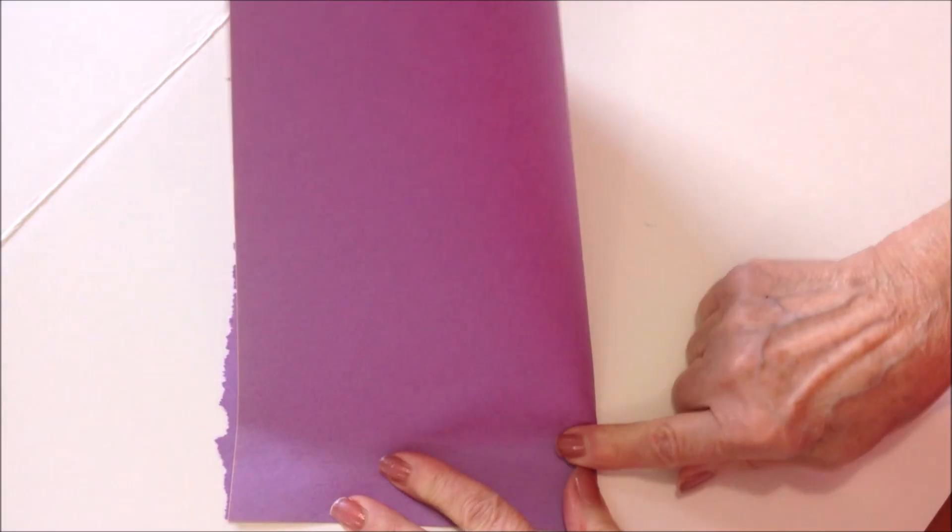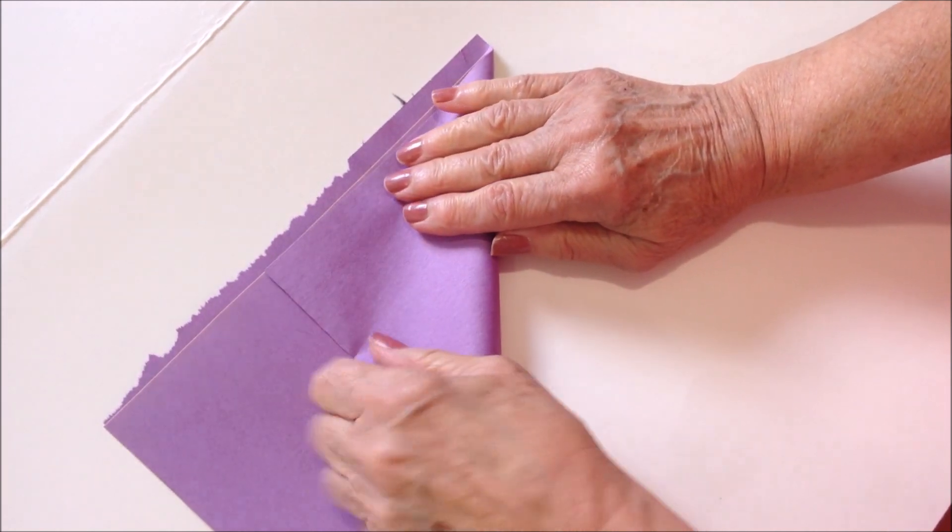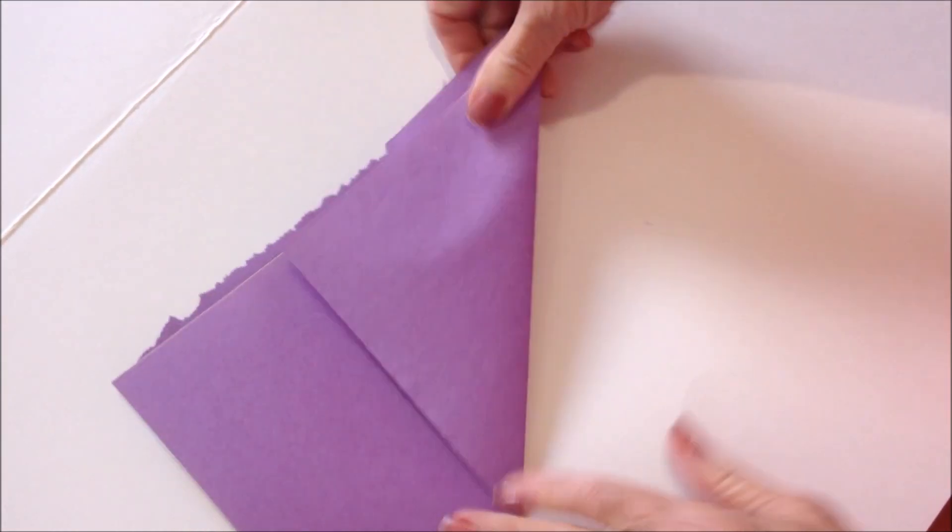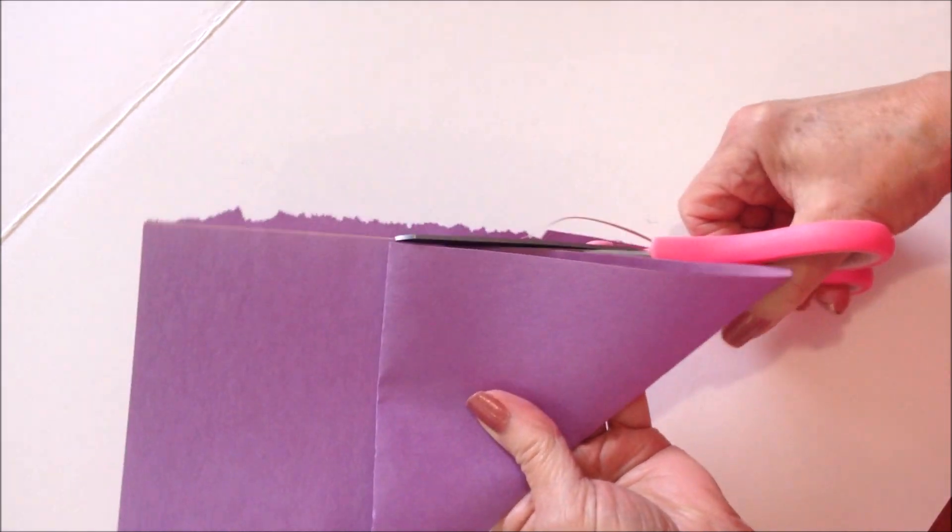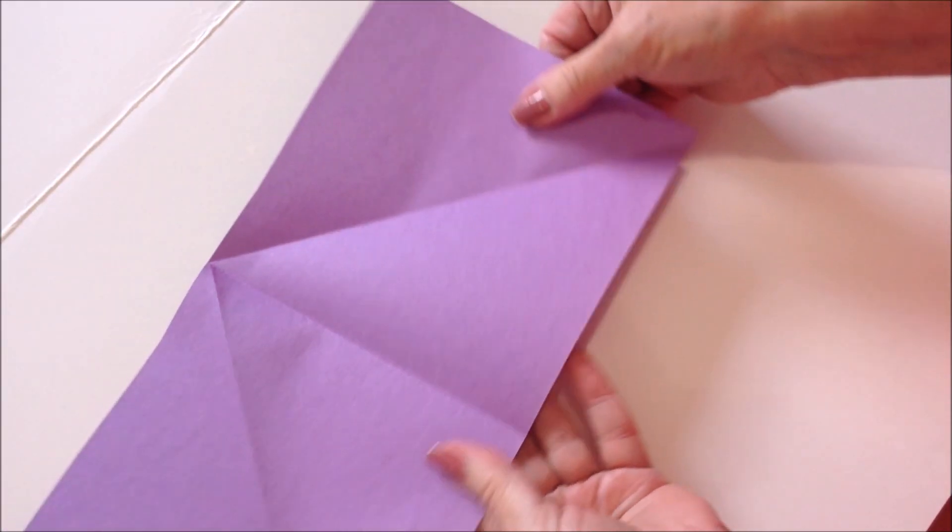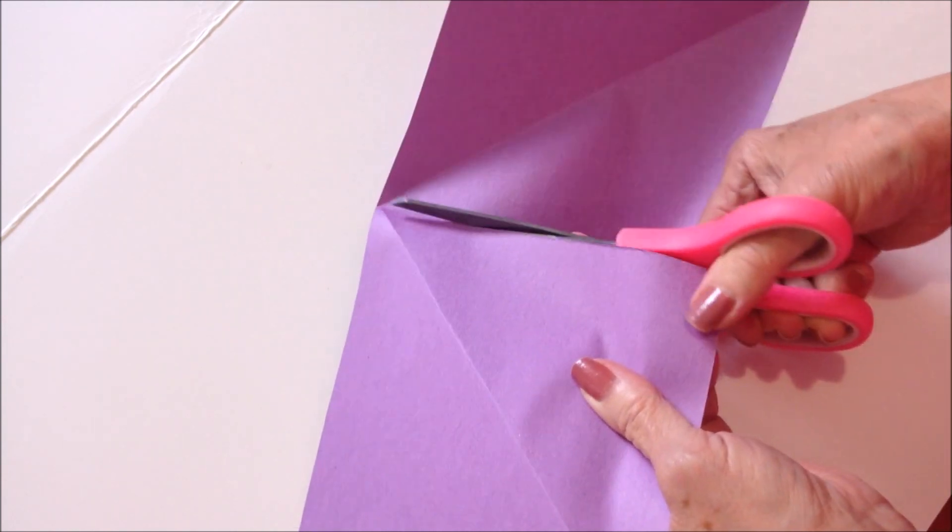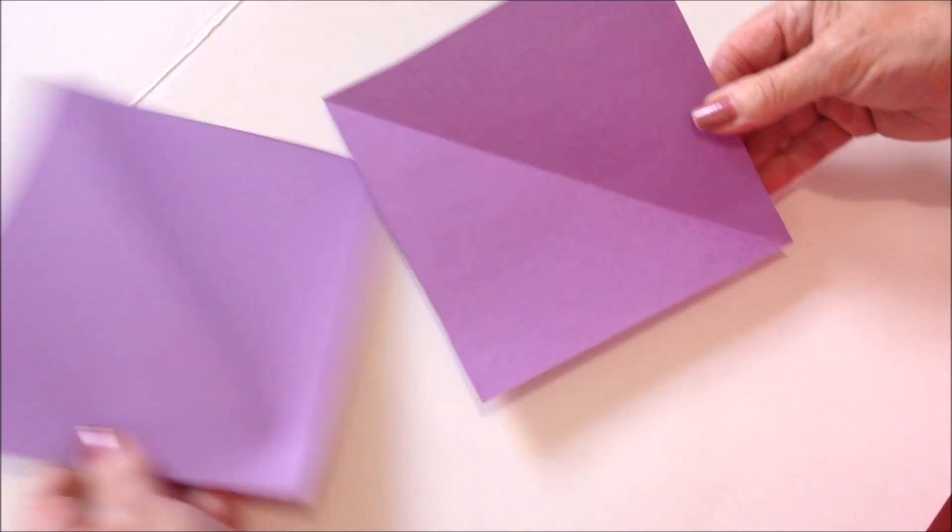Fold your paper in half and now fold it diagonally, and then cut these out. Cut this so that you have two equal squares like that.